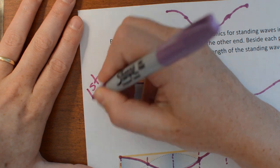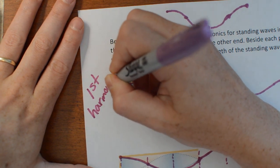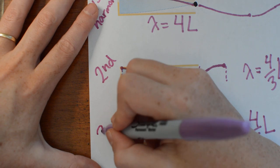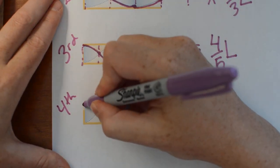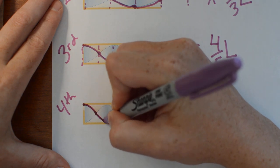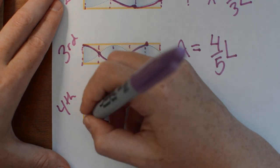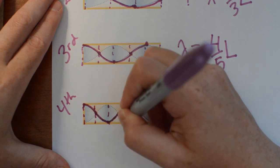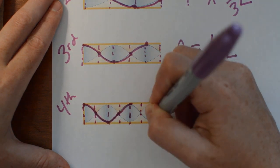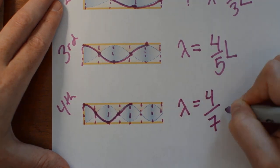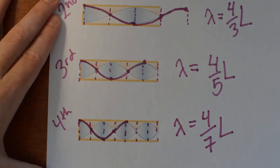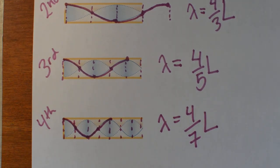To label these: this is the first harmonic, this is the second, this is the third, and this is the fourth harmonic for a clarinet. We're going to do some problem solving with this in class, but that's just an introduction to how harmonics work with wind and stringed instruments.